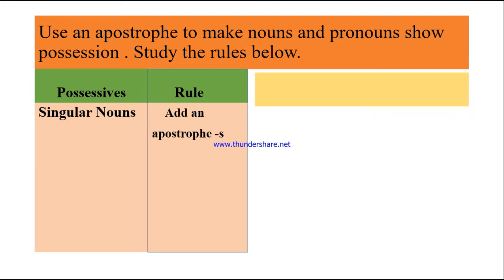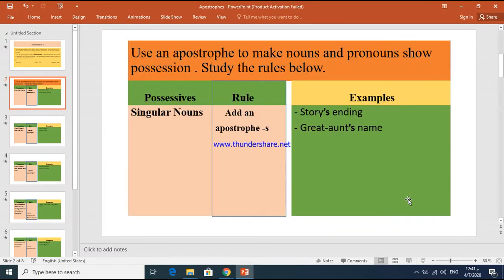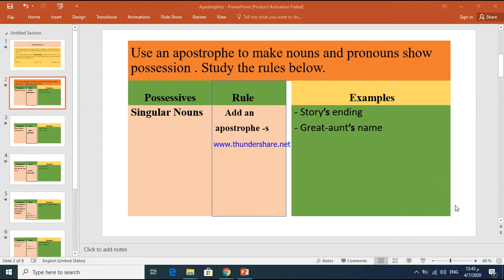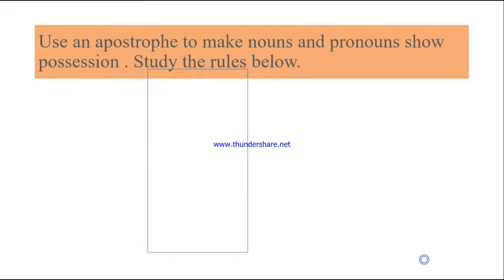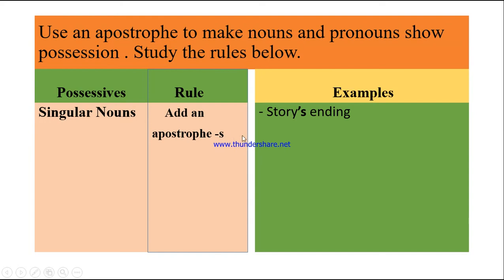Now let's talk about the rules of using apostrophes. Use an apostrophe to make nouns show possession. If you have a singular noun and want to show possession, add apostrophe S. For example, 'the story's ending' means the ending of the story. 'Aunt's name' means the name of the aunt.